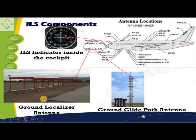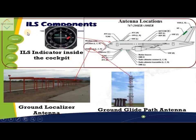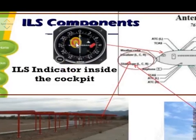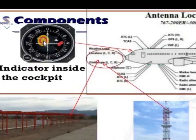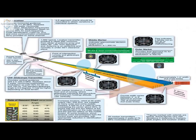The instrument landing system basically has two parts. The first is the ground part, which consists of a localizer having a ground localizer antenna and a ground glide path antenna. The other part of ILS is the airborne part, which includes the course deviation indicator (CDI) inside the cockpit and the airborne antennas for glide slope and localizer. A third component, not officially part of ILS but used as an extra feature to improve range conditions, is the marker beacon.